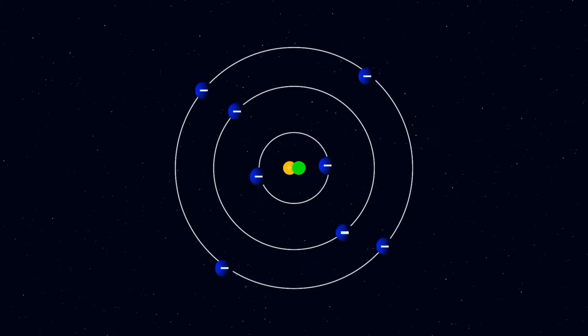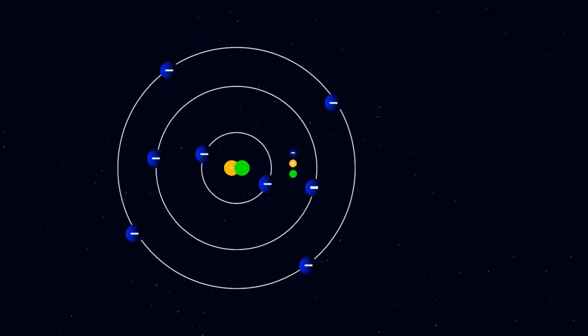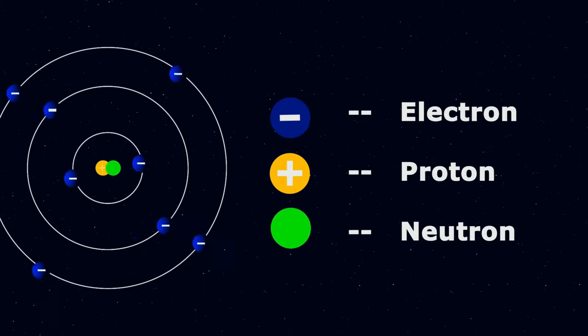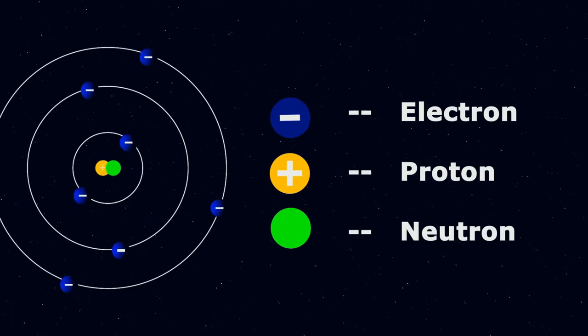at the center, orbited by smaller spheres, or dots, referred to as electrons. We use this model because it's straightforward, and it works for computations and predictions.